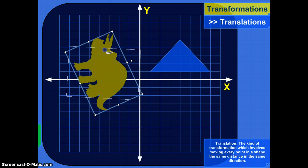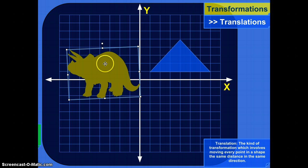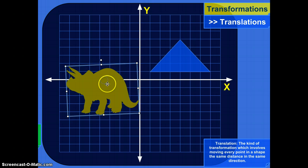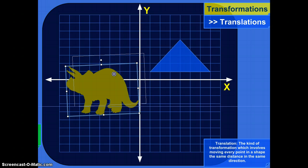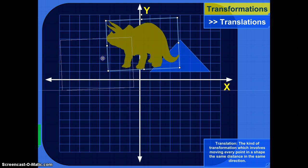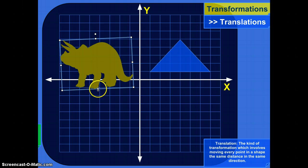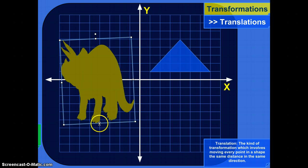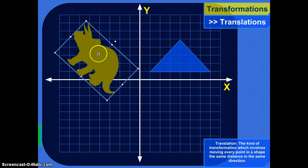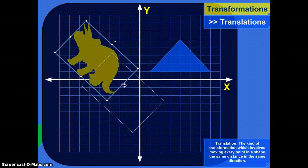The translation is specifically just moving the shape up and down or left and right, or some kind of combination — maybe up and to the right. It's simply just shifting it so that all the points in the object move together.